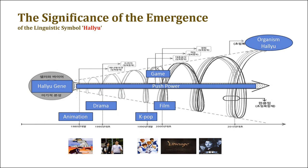This figure is a model of the diachronic evolutionary structure of Hallyu. It shows how Hallyu was created in the flow of time. The TV animation genre opens the door to the export of K-culture contents. In 1987, Korea's first TV animation series, 'Todorikachi — Wondering Megapai,' broadcast by KBS, was exported to France.